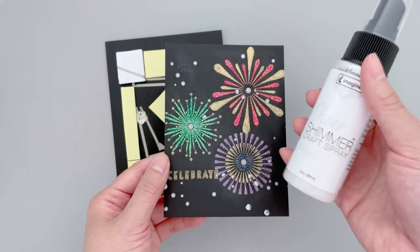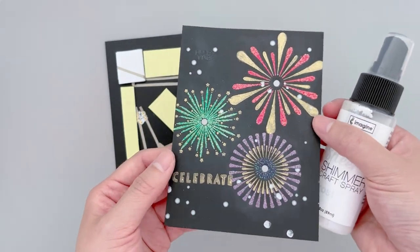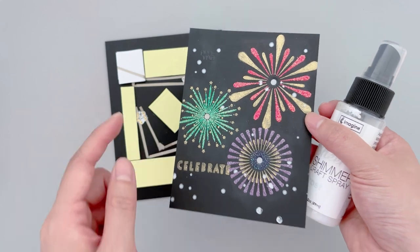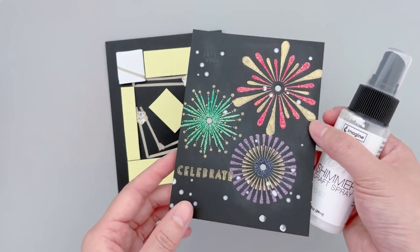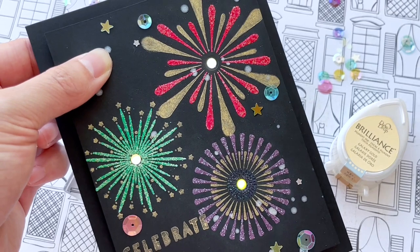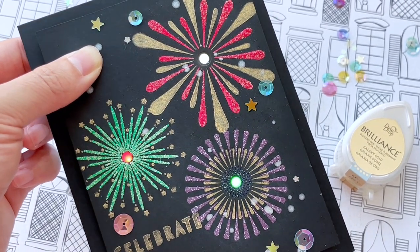For some finishing touches, I also spritz on some craft spray. This one is actually shimmery and it has a white pearl shine. Then I stamped the sentiment and added some sequins and that finishes the card.